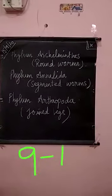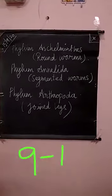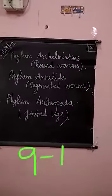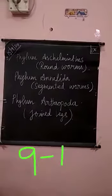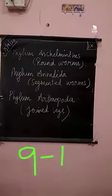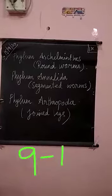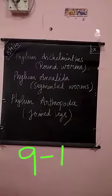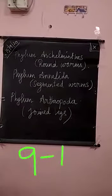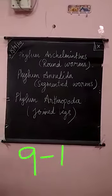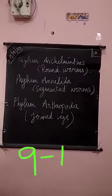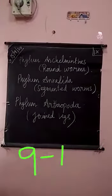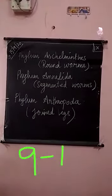The next phylum is Phylum Annelida — the segmented worms. In roundworms there is no segmentation, but in Phylum Annelida, the animals have segmentation.